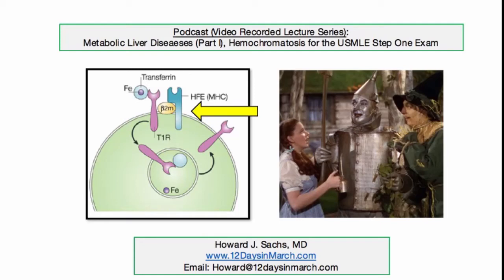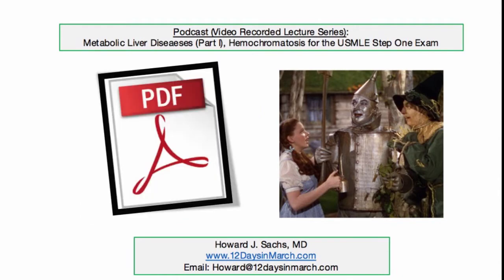Welcome back to the 12 Days in March video podcast edition. This material was delivered during a series of live lectures at the University of Massachusetts Medical School. In this edition, we will review metabolic liver disease with a focus on hemochromatosis. In subsequent presentations, we will cover alpha-1 antitrypsin deficiency as well as Wilson's disease for the USMLE Step 1 exam. A PDF of this recording is available at the 12 Days website.